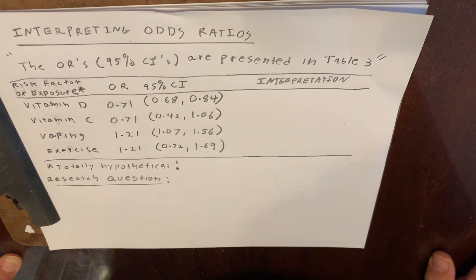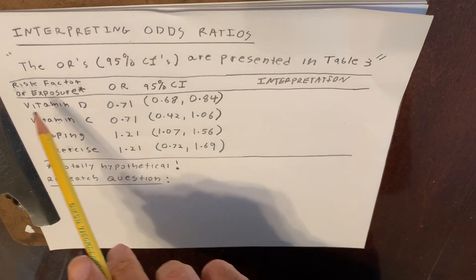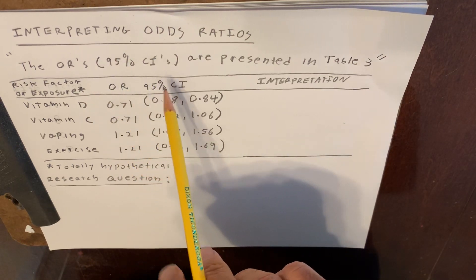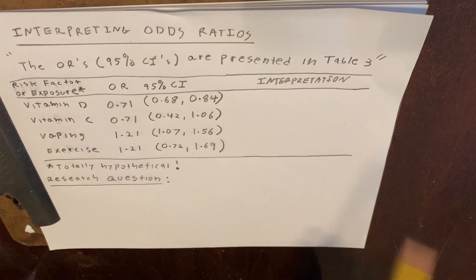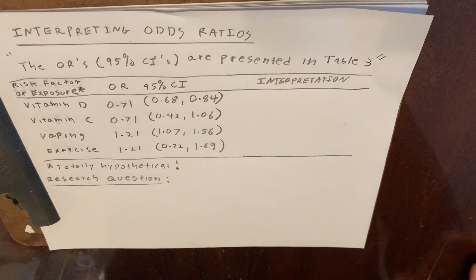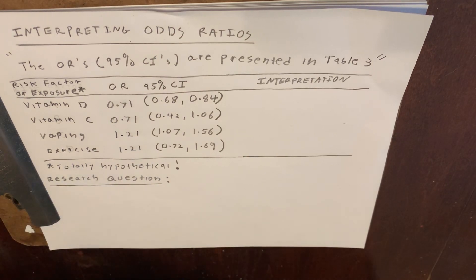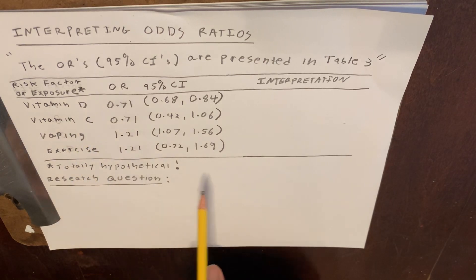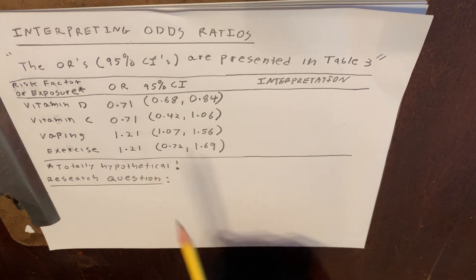Today we're going to talk about interpreting odds ratios as they might appear in an actual medical journal. Typically, you might see a sentence that says the odds ratios — 95% confidence intervals are presented in table 3. Table 3 could look something like this, and feel free to pause the video and copy it down. We have a risk factor, and these are completely hypothetical — this isn't a real study, but these are the way odds ratios could look in a real study.